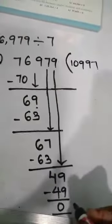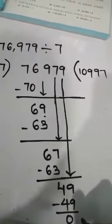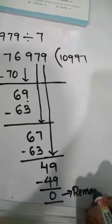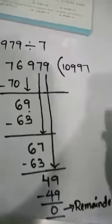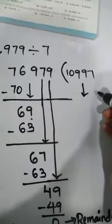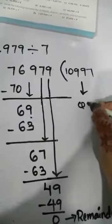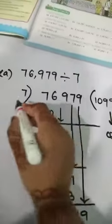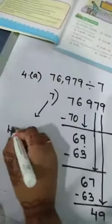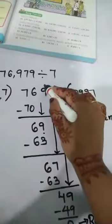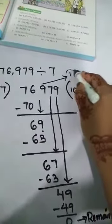So now what we have to write here: we have to write the dividend, divisor, quotient, and remainder. So this 0 is the remainder. 10,997 is the quotient. 7 is the divisor and 76,979 is the dividend.